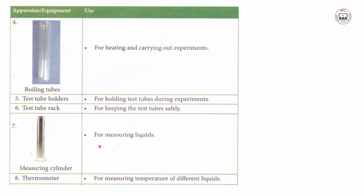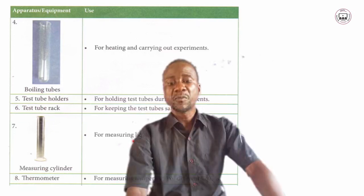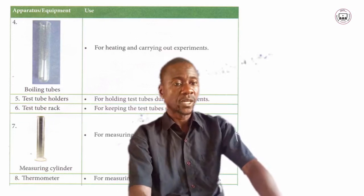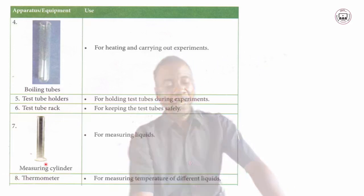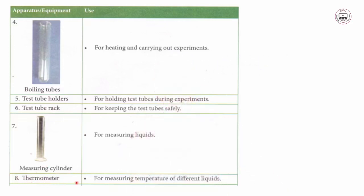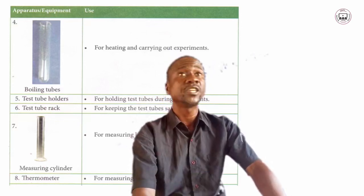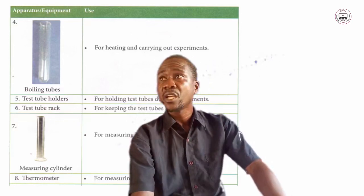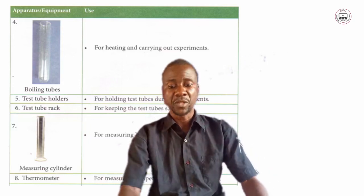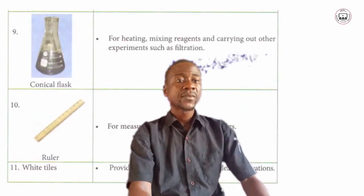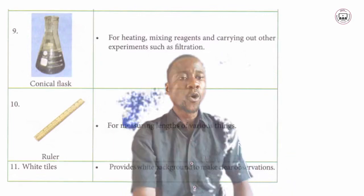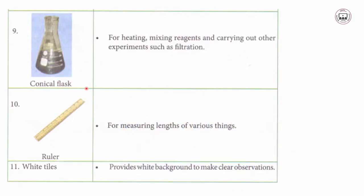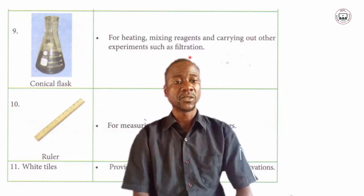Number six, the measuring cylinder — shown here in a diagram — used for measuring liquids. Liquids must be measured using a proper container, and the measuring cylinder is that container. Number seven, the thermometer — for measuring the temperature of different liquids and other objects brought to the laboratory for experiments. Number eight, the conical flask — used for heating, mixing reagents, and carrying out other experiments such as measuring pressure.